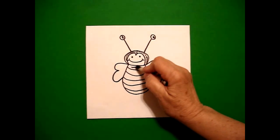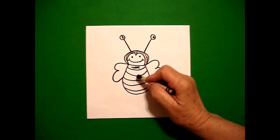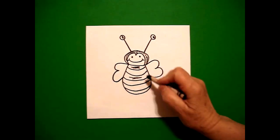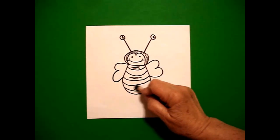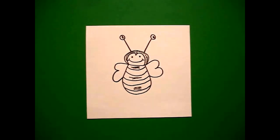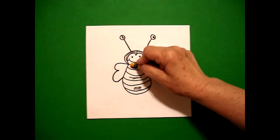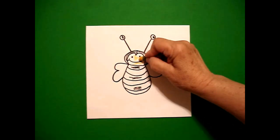I'm going to come down and do an AB pattern. This is A, that's B, A, B, A. And now I'm going to come back in with my yellow and I'm going to color his face yellow.